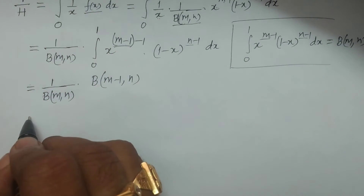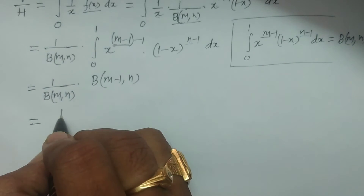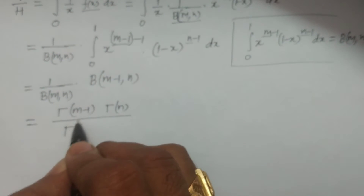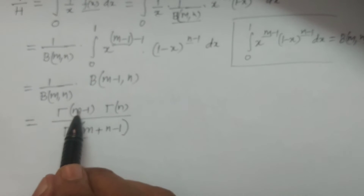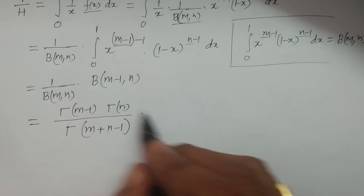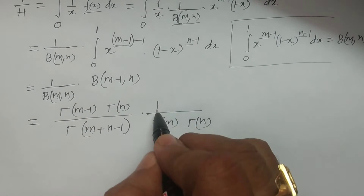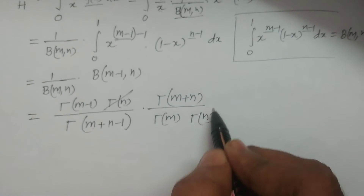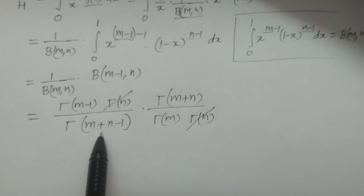Now use the gamma formula. Beta(m minus 1, n) can be expressed as gamma(m minus 1) times gamma(n) divided by gamma(m minus 1 plus n), which is gamma(m plus n minus 1). And 1 by beta(m, n) in the denominator gives gamma(m) times gamma(n) divided by gamma(m plus n), which we take to the numerator. So gamma(n) will get cancelled. The remaining values are gamma(m minus 1), gamma(m), gamma(m plus n), and gamma(m plus n minus 1).